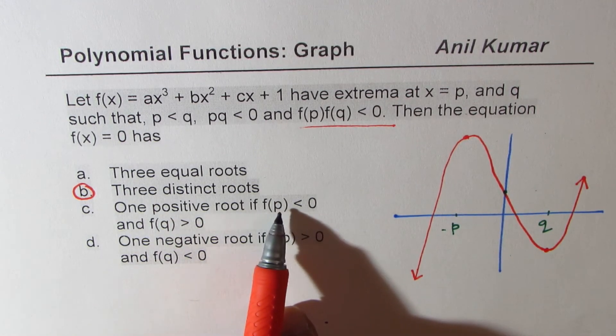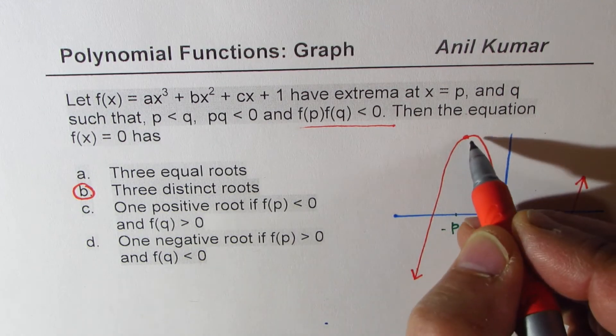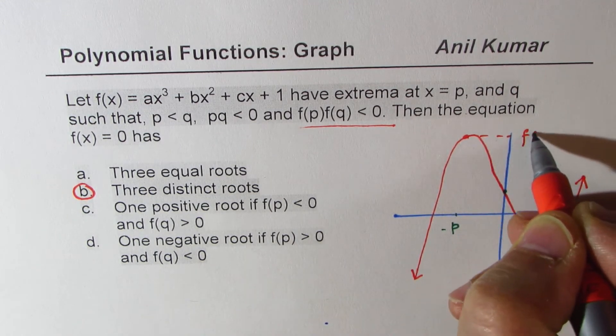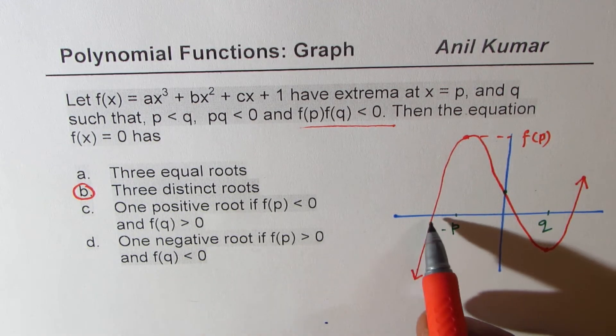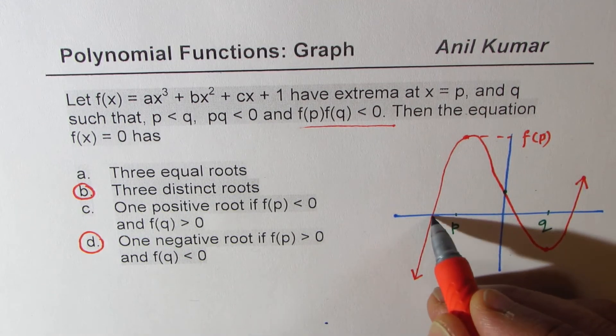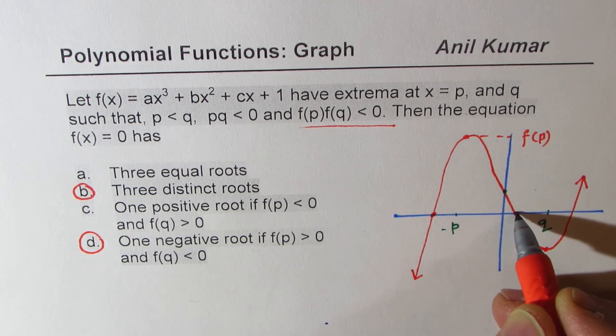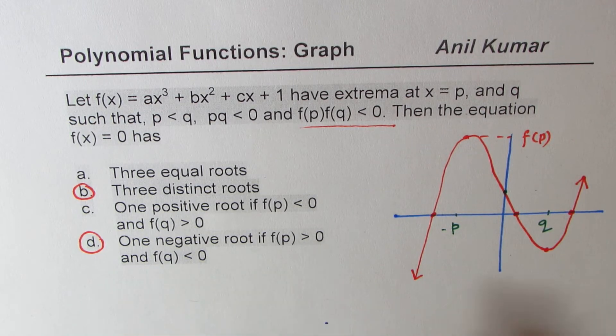One positive root, if f(p) is less than 0. Well, in this case, this is f(p). So f(p) is greater than 0, we have 1 negative, 2 positive. This is also correct. So we have three roots, 1 negative, and 2 positive. So that is the scenario when f(p) is greater than 0.